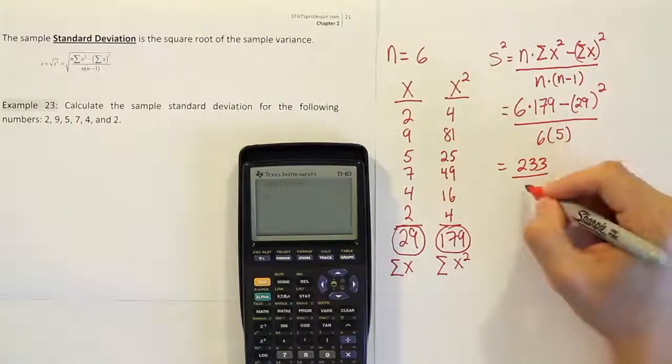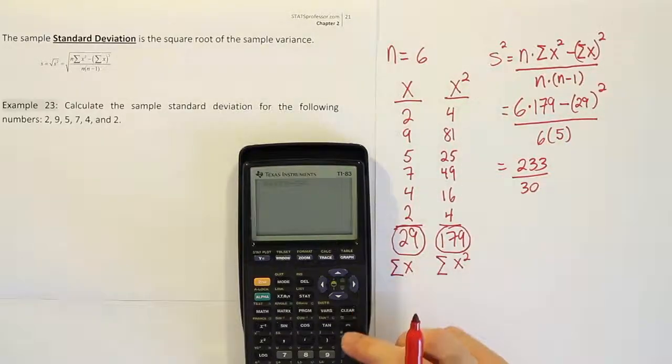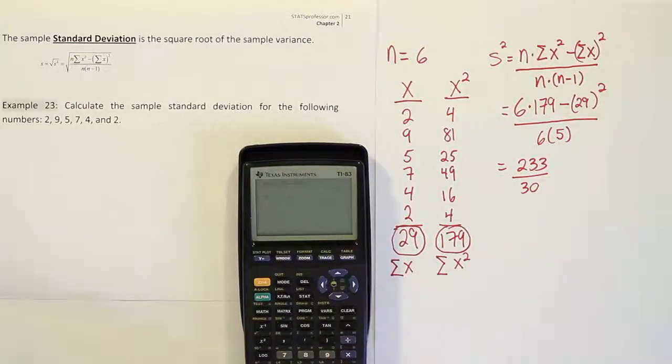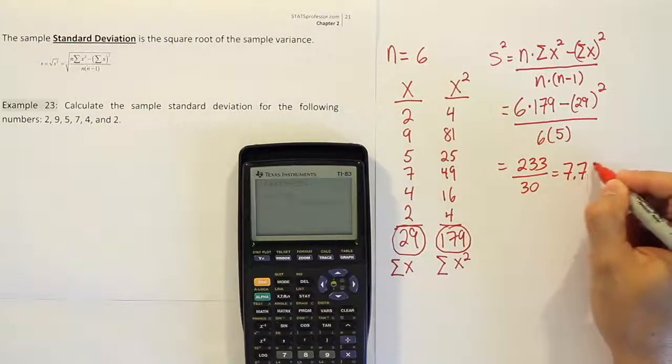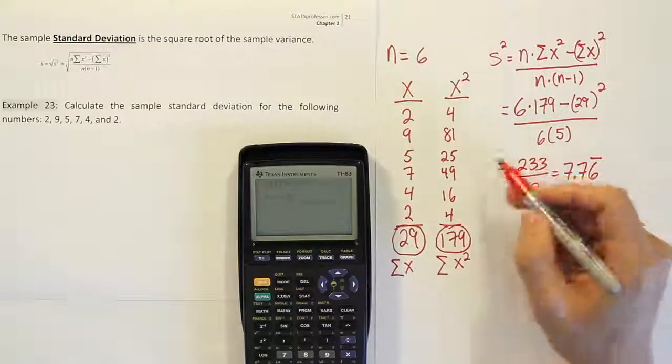And then we're going to divide that by 30. So I'll just hit divide by 30 after that, and I get the answer 7.76 repeating. Now that's your variance though.